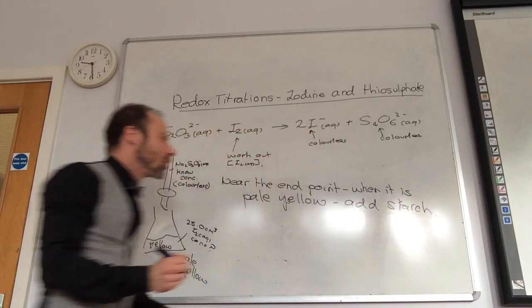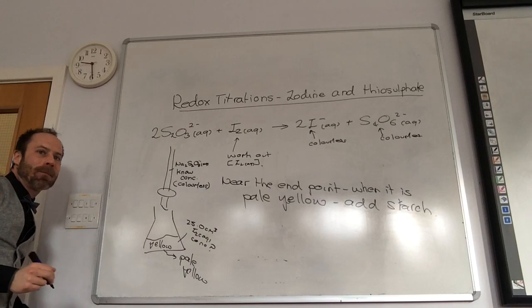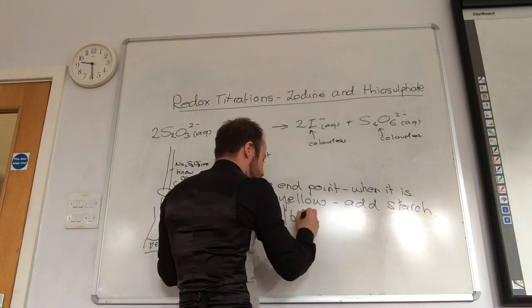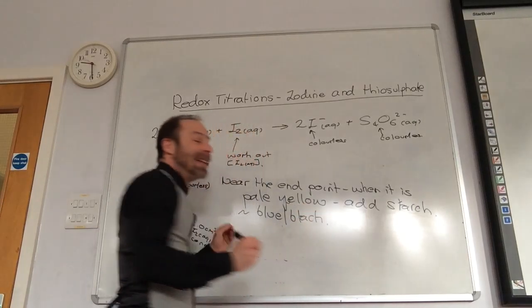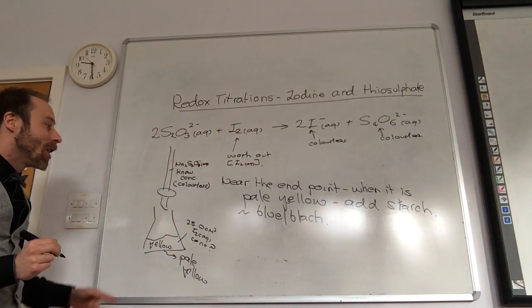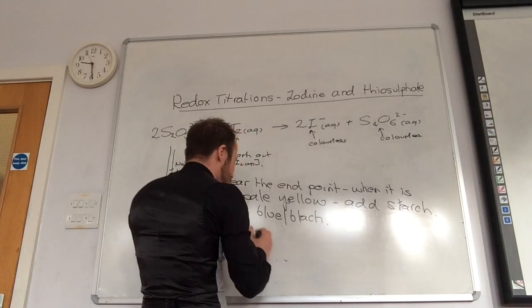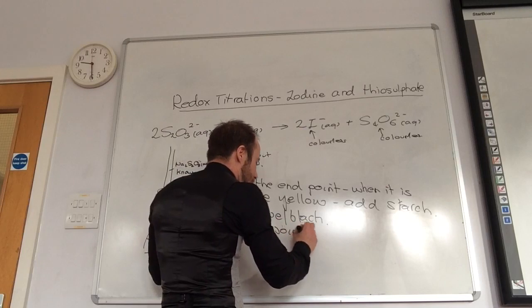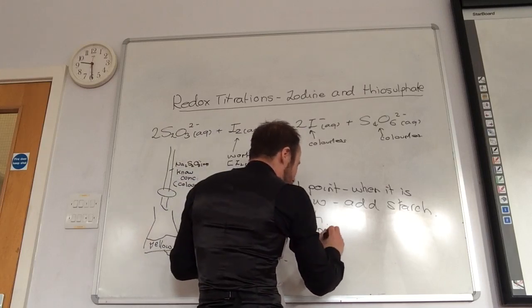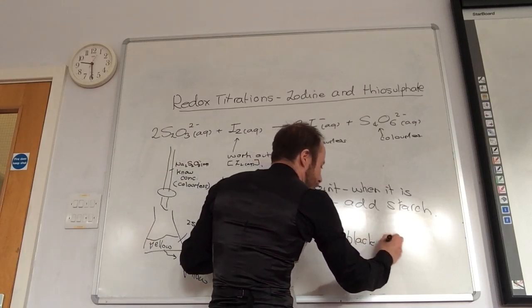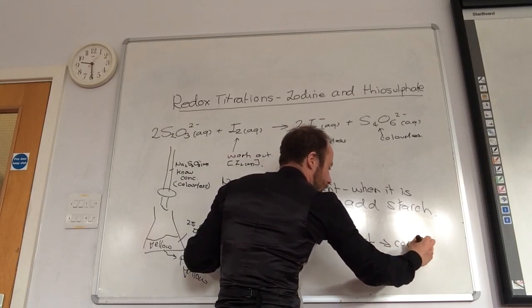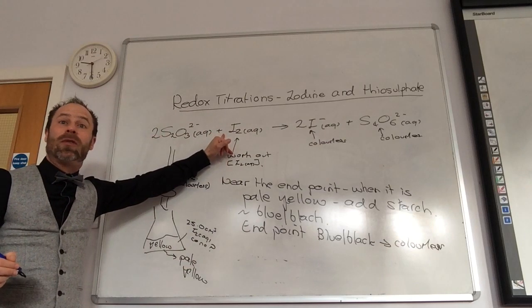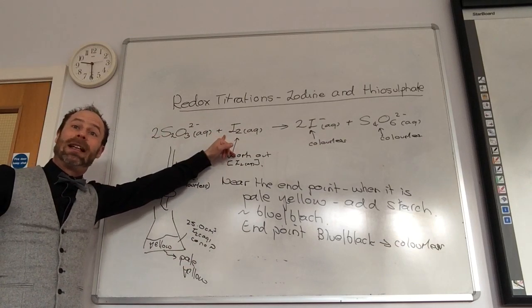What does starch do when it meets iodine? Blue-black. It goes like a blue-black color. And the end point is now it goes from blue-black to colorless. At the end point, because all the iodine would have been removed, the starch isn't detecting any iodine anymore.